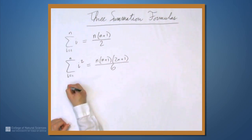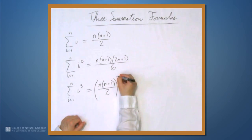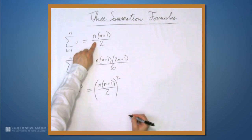And finally, we have i equals 1 to n. Well, we did i, i squared. Let's now do i cubed. So the sum of the first n cubed is n times n plus 1 over 2 quantity squared. So it's this formula only squared.